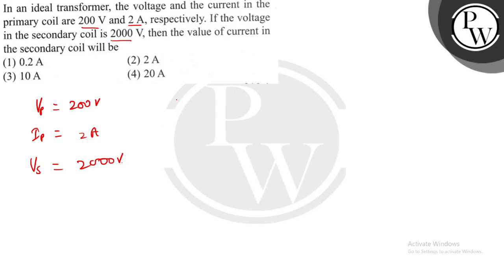We know that the relation in primary coil voltage and secondary coil current - the relation between current and voltage is Vs upon Vp should be equal to Ip upon Is. Both are inversely proportional.